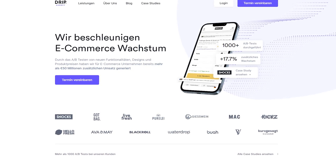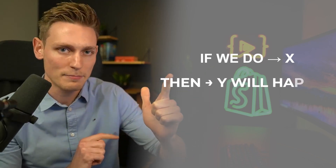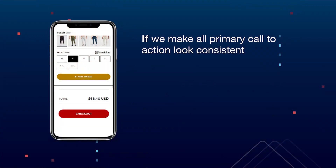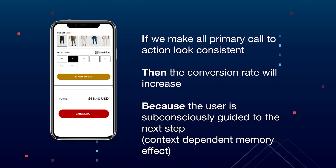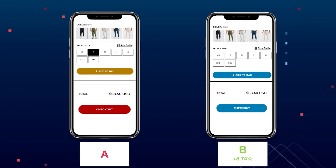Here's a quick framework for designing experiments effectively, which I learned from the leading CRO agency here in Germany. They always say it's useful to answer this sentence: 'If we do X, then Y happens, because of Z.' This is how you articulate a test hypothesis. For example: 'If we make all primary call-to-actions look consistent, then the conversion rate will increase, because the user is subconsciously guided to the next step' — that's the context-dependent memory effect. I can't recall exact numbers, but the test went incredibly well for that client.